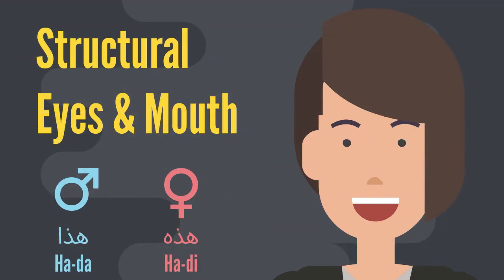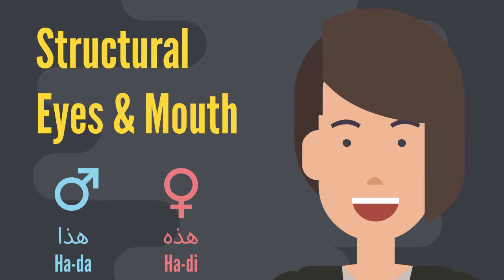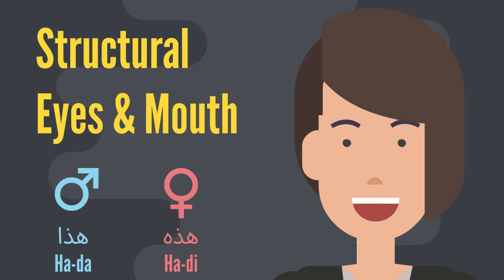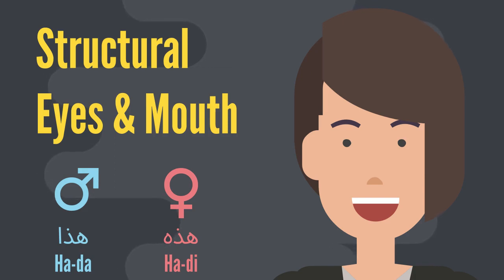Let's start by covering the structural parts of our face and head, and then we'll dive into specific terms for our eyes and mouth. We'll also make sure you know whether each of these features is going to be a male or a female noun. All nouns in Arabic have a gender.